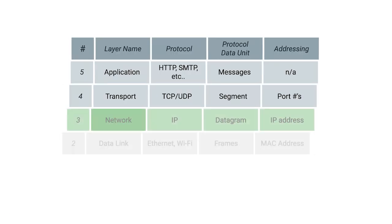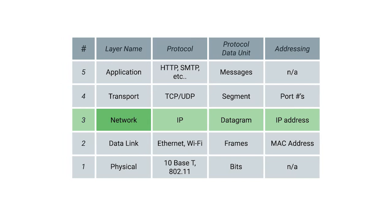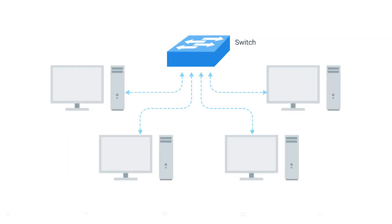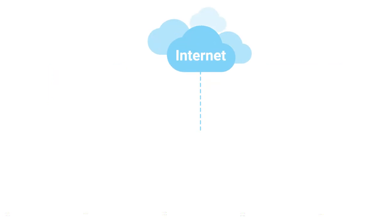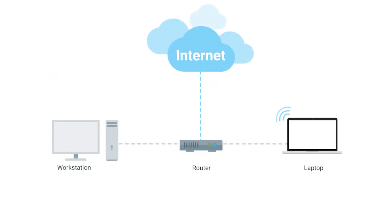While a hub is a layer one device and a switch is a layer two device, a router operates at layer three, a network layer. Just like a switch can inspect ethernet data to determine where to send things, a router can inspect IP data to determine where to send things.